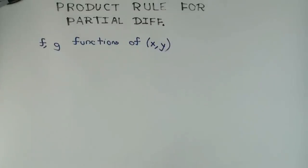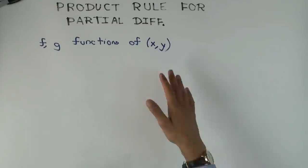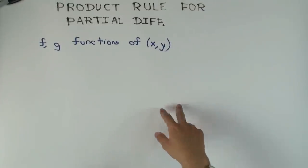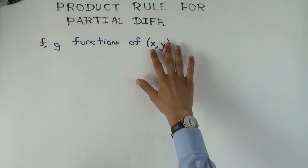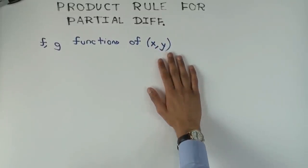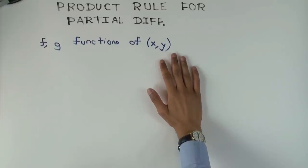You probably are familiar with the product rule for differentiation of a function of one variable, or rather for product of two functions of one variable. Now I'm going to do the product rule for partial differentiation of two functions, both of them are functions of two variables, and I'm going to consider the product of these two functions.